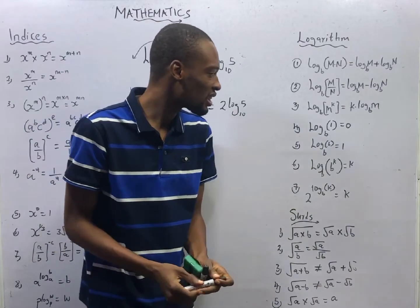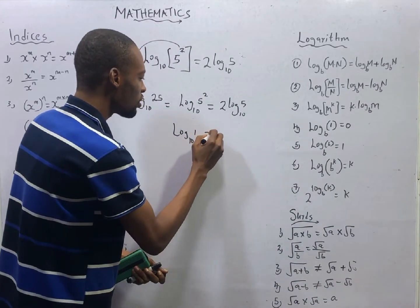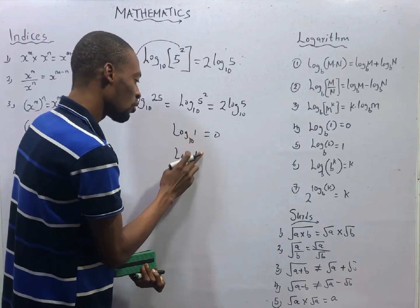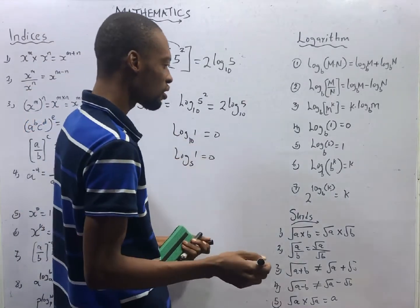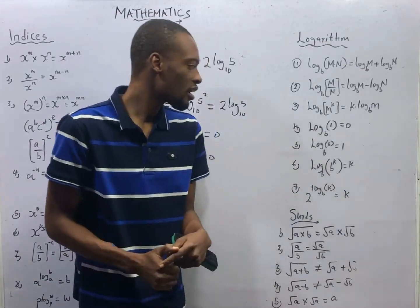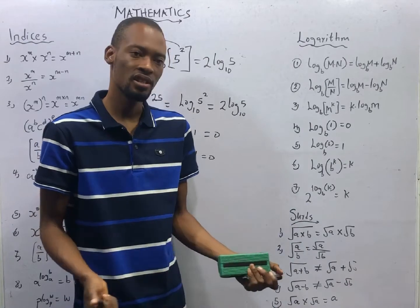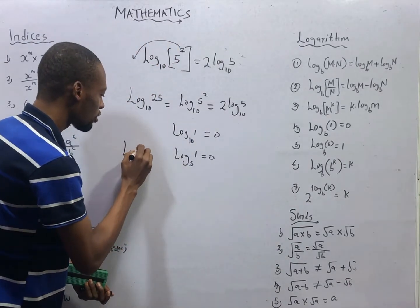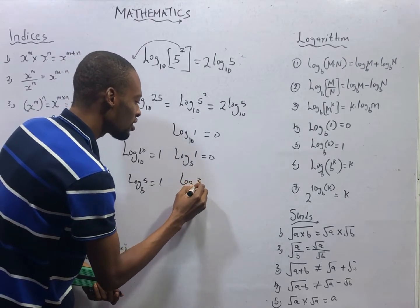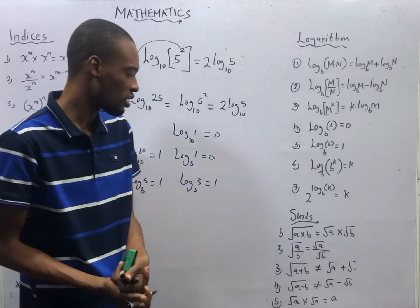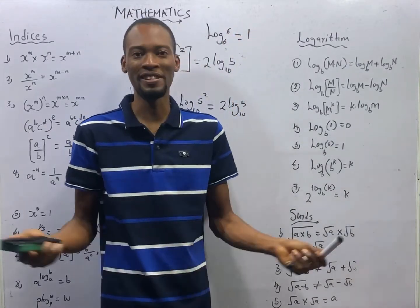The fourth law of logarithms says that when you have log 1 to any base, it is 0. Which means log 1 base 10 equals 0, log 1 base 5 equals 0 — log 1 to any base equals 0. Then the fifth law says if you have the log of a number to its own base — meaning the number and the base are the same — the answer is 1. So log 10 base 10 is 1, log 5 base 5 is 1, log 3 base 3 is 1. In a question, if you see log 6 base 6, simply change it to 1 and continue solving.